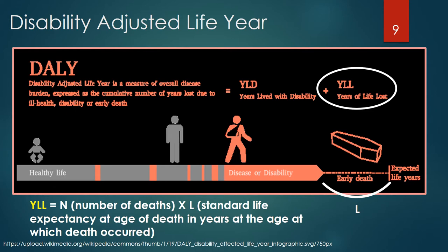The years of life lost, or YLL, basically corresponds to the number of deaths multiplied by the standard life expectancy at the age at which death occurs. The basic formula for YLL is: for a given cause, age, and sex — YLL equals N times L, where N equals the number of deaths due to a disease, and L equals standard life expectancy at age of death in years at the age at which death occurred due to this disease in the population.